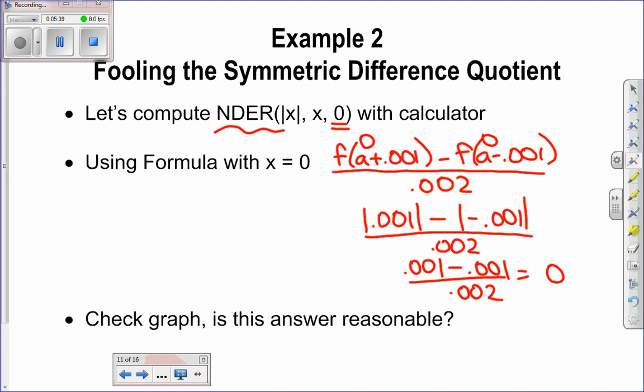If you put 0 as the answer to your problem, you would actually get it wrong. But why, Ms. Kleiber? The calculator, at least the TI-84 calculator, tells me that this is the derivative of the absolute value of x at 0. What does the TI-inspire tell you?